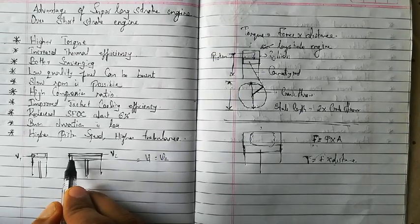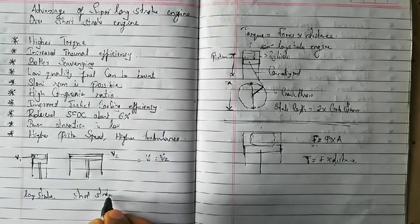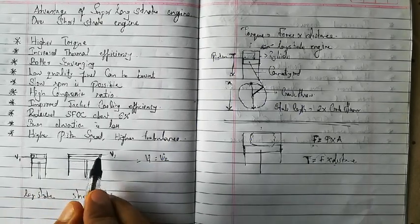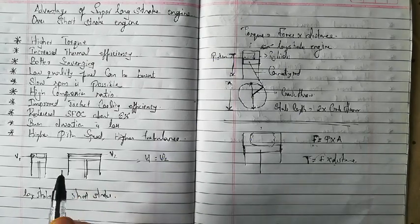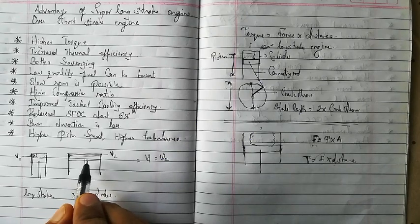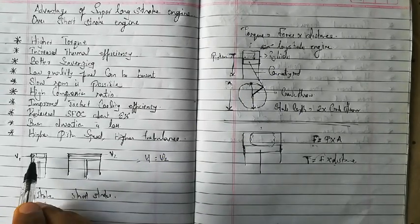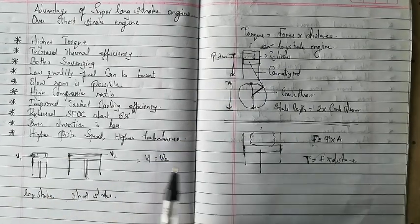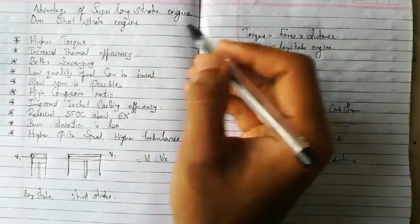In a short stroke engine, the larger surface area leads to larger heat dissipation. When combustion happens, more heat is wasted through this larger surface area and cannot be used to push the piston downward. In a long stroke engine, the combustion chamber has less surface area, so less heat is dissipated and wasted. This is how thermal efficiency is increased in long stroke engines.